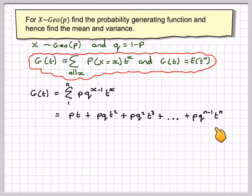Up to pq^(n-1)t^n. Taking out p as a common factor, we get t plus qt squared plus q²t³ plus q^(n-1)t^n.